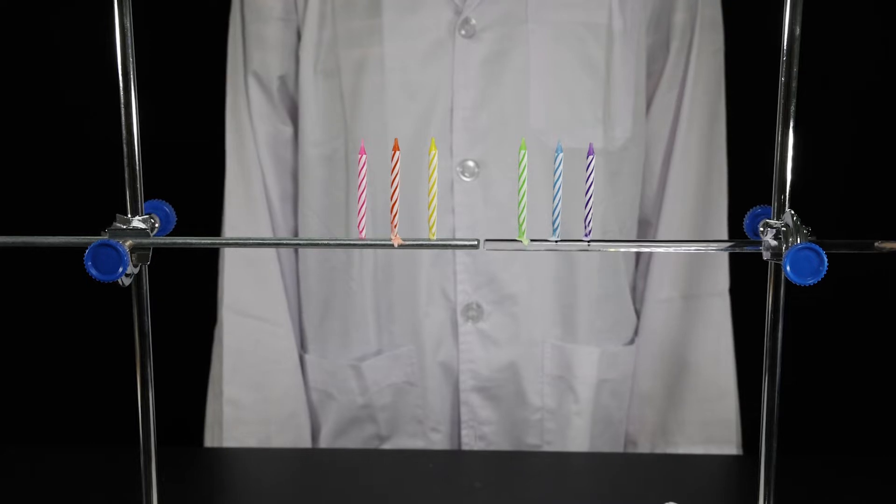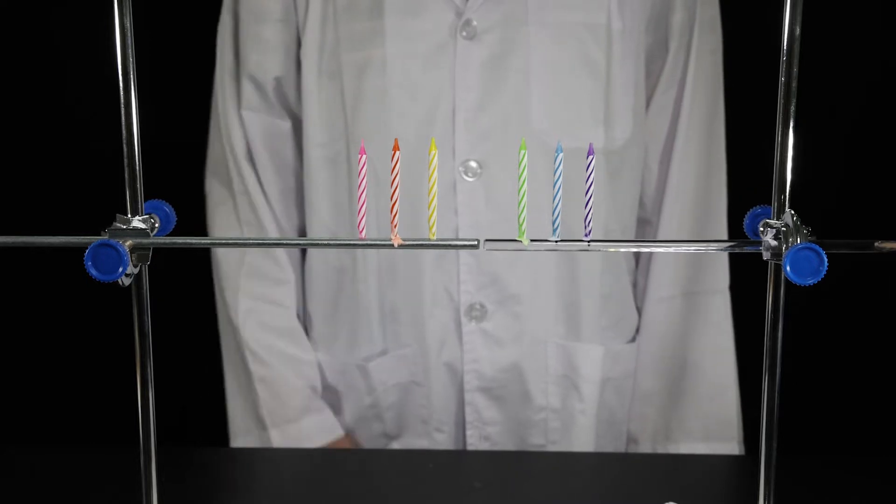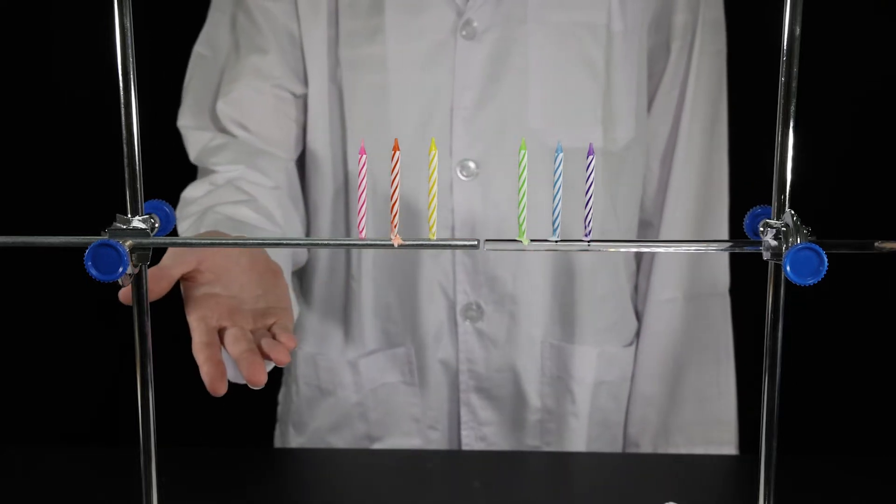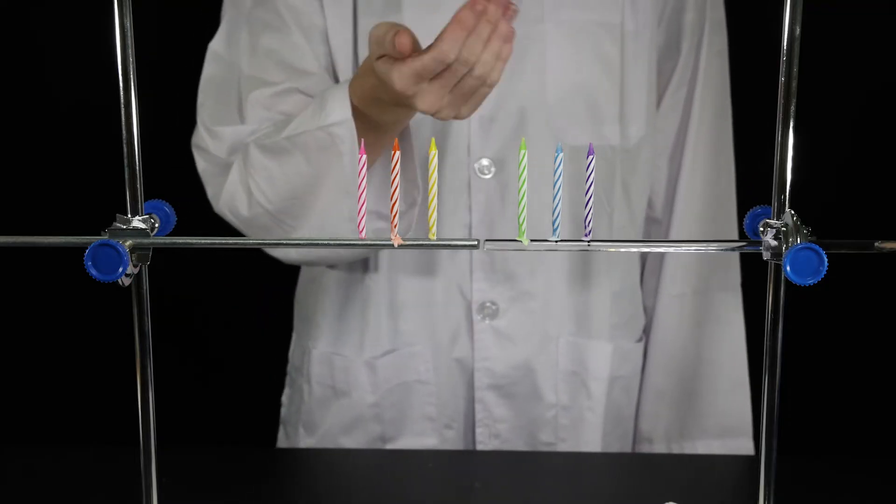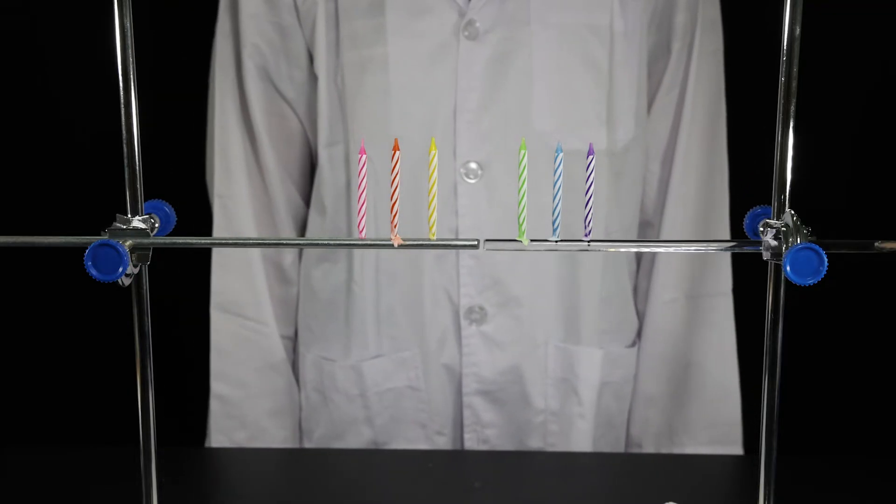Look at the experiment setup. Both rods are attached to retort stands. On each rod are three candles. Predict which candles will fall off the rods first when the burner is lit.